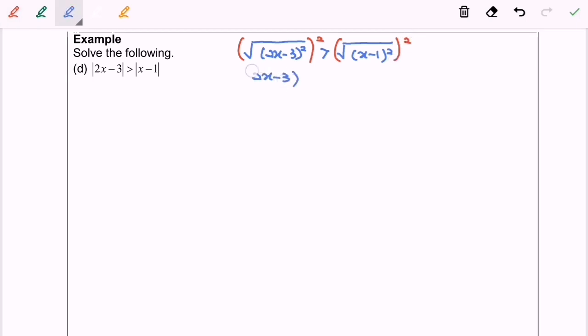And we will have square on the left and x minus 1 square on the right. So next step, we are going to expand for both sides.